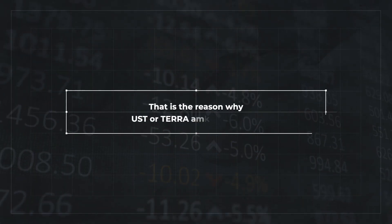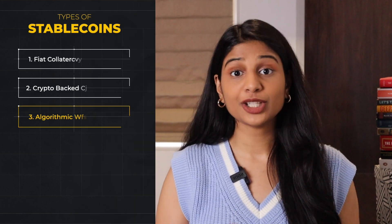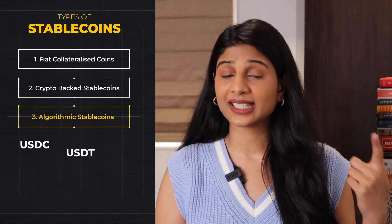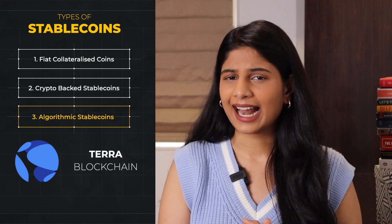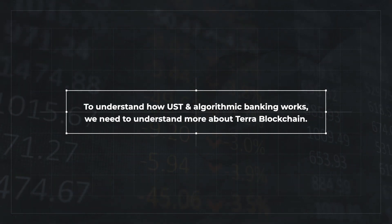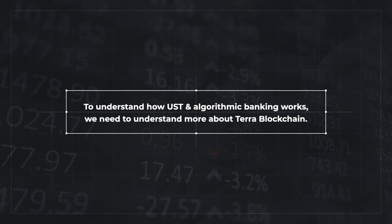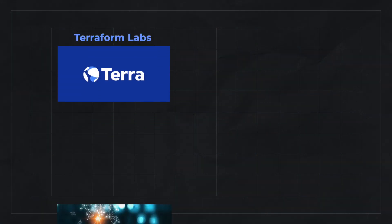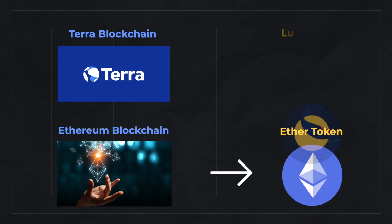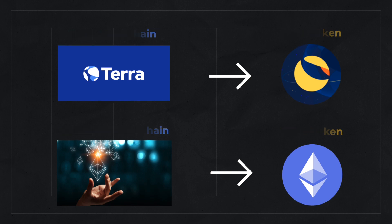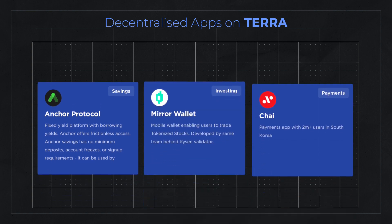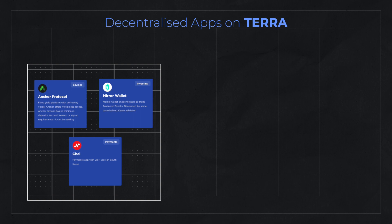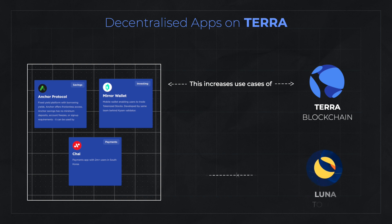Let's discuss the third type of stablecoins: algorithmic stablecoins. Unlike USDC, USDT, and DAI — which are built on the Ethereum blockchain — UST is actually built on the Terra blockchain and is backed by an algorithm. The Terra blockchain is developed by Terraform Labs. Just like Ethereum has a token called Ether, the token of Terra blockchain is LUNA. Apart from UST, there are many decentralized apps on Terra, such as Anchor for saving, Mirror for investing, and Chai for payments. Because of these apps, the utility and use cases of Terra have increased, and hence the demand and value of LUNA has also increased.